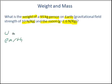Weight on earth equals the mass which is 95 times by the gravitational field strength of earth which is 10. Which equals 950 newtons.